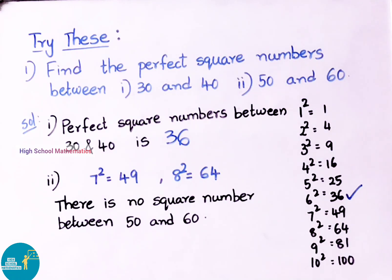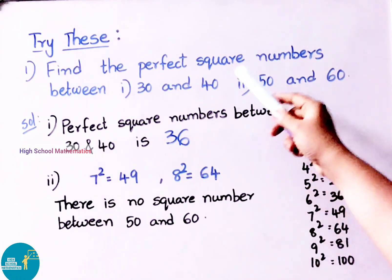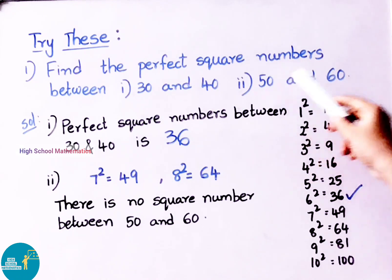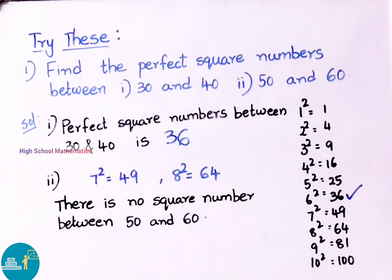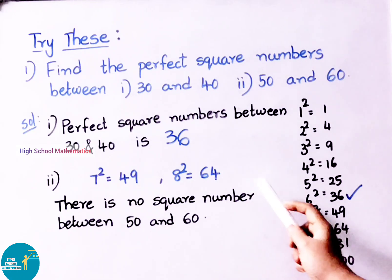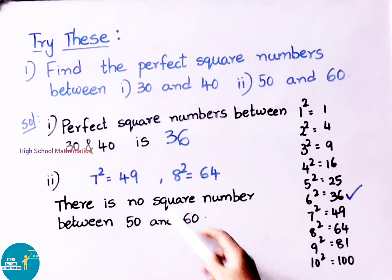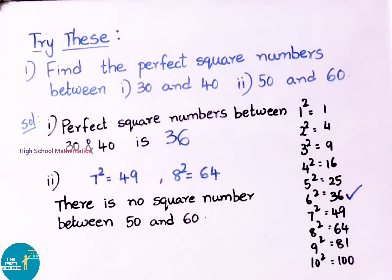See now the second one — we have to find perfect square numbers between 50 and 60. If we observe the squares, 7 square is 49 and 8 square is 64. So if we observe these square numbers, there is no perfect square between 50 and 60. Therefore we can say there is no perfect square number between 50 and 60.